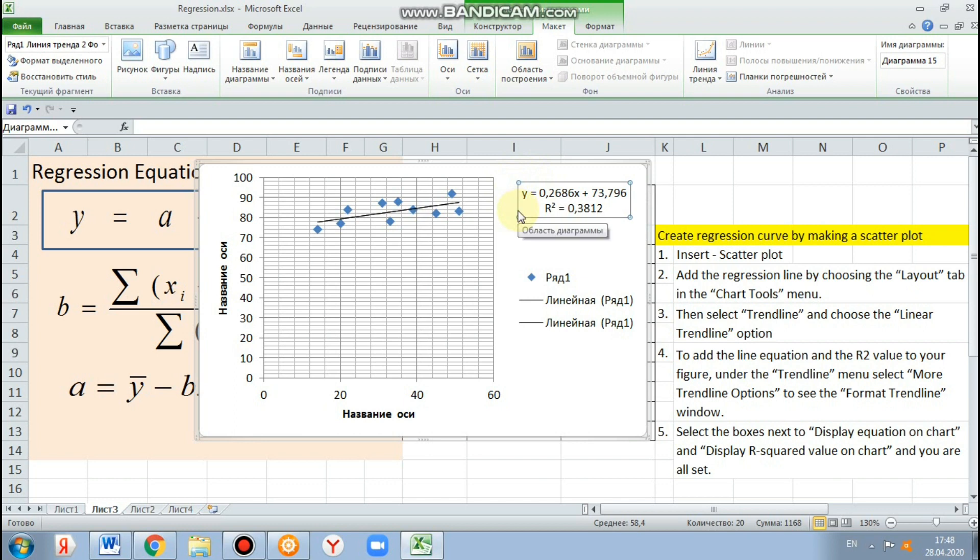Student success in a statistics class is 38% dependent on x, 38% dependent on pretest score.